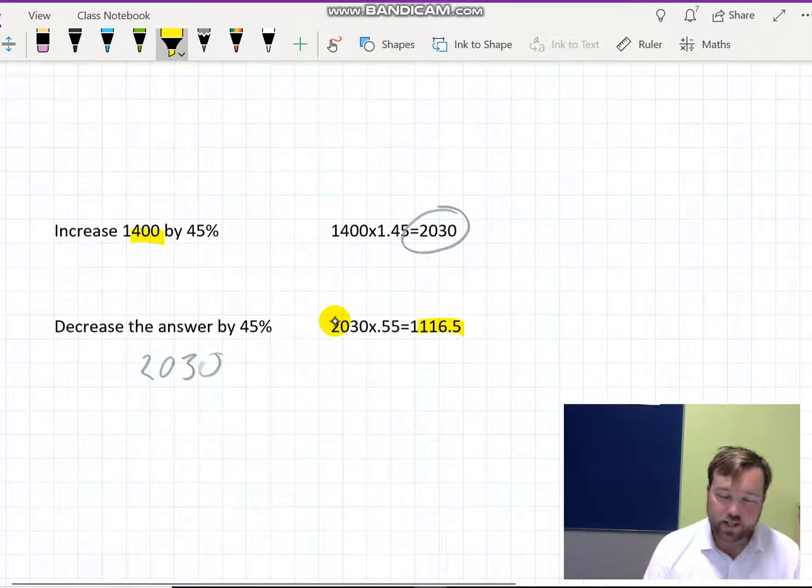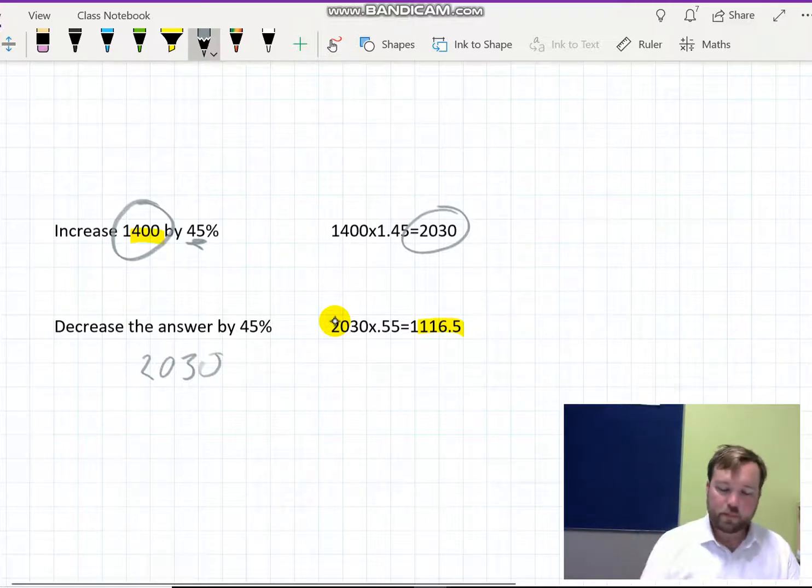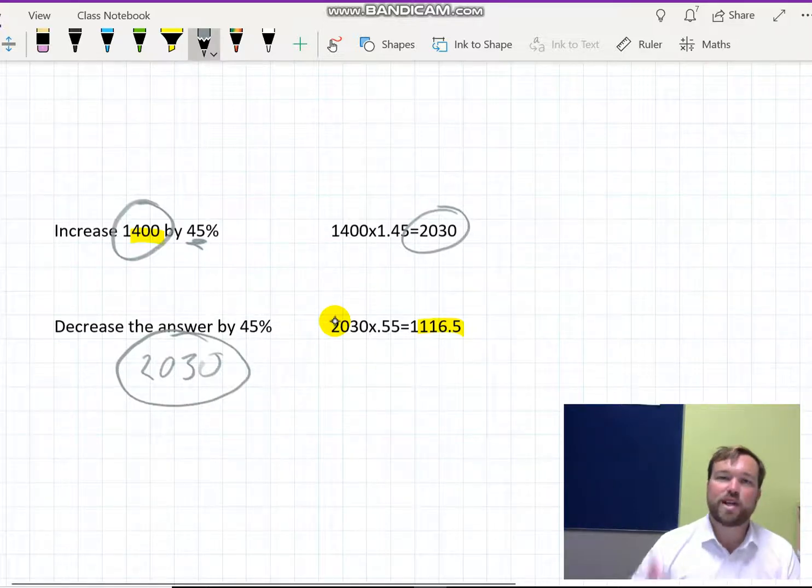And the reason that's happening is because when we increased, we increased by 45% of the 1,400. So we're taking 45% of 1,400 and going up. But here we're taking 45%, not of 1,400, we're taking 45% of 2,030 and going down. And clearly 45% of 2,030 is bigger than 45% of 1,400. So we end up back below that original 1,400 mark.